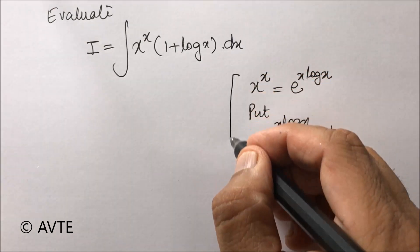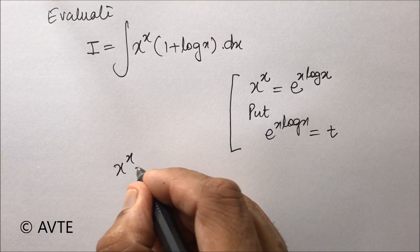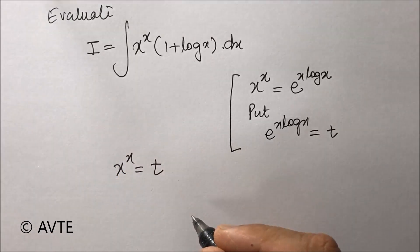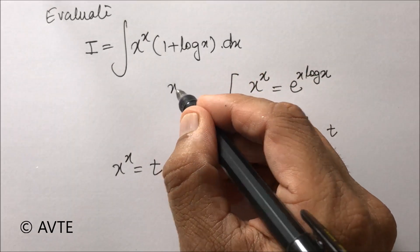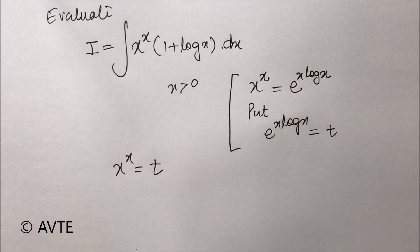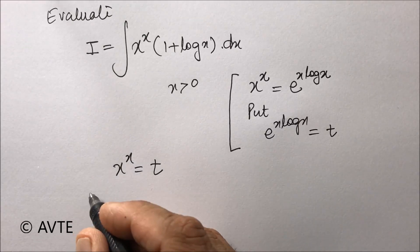The other method is: you take x^x equals t and take log on both sides. Because the question contains log, obviously the domain will be x > 0, since log is possible only when you have positive values. So we can take log without disturbing the domain.